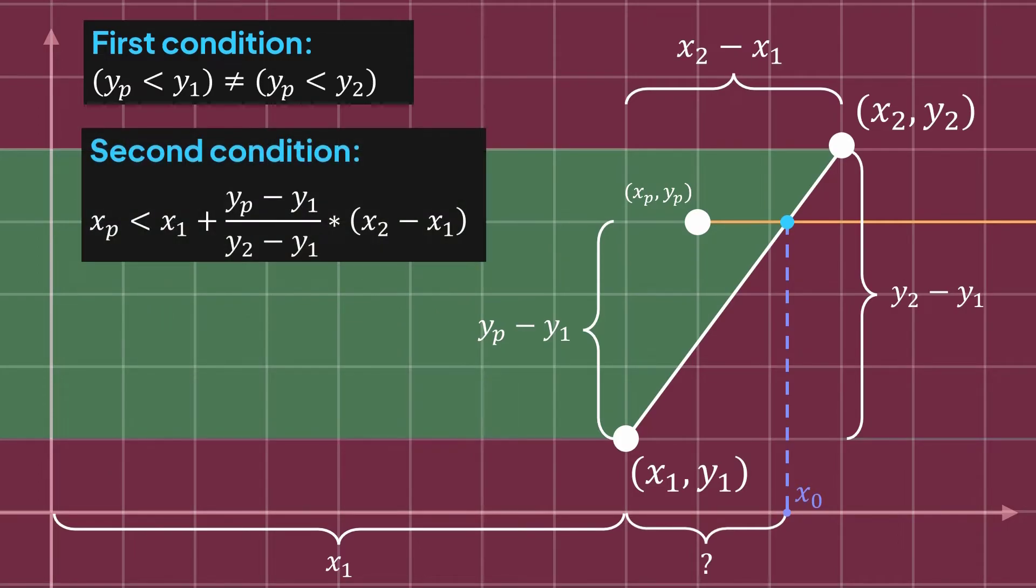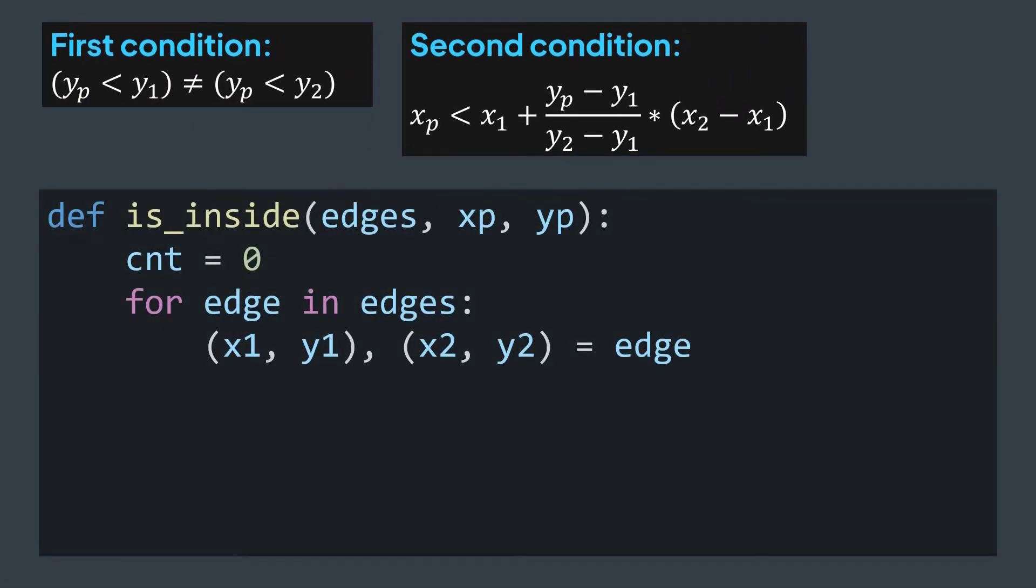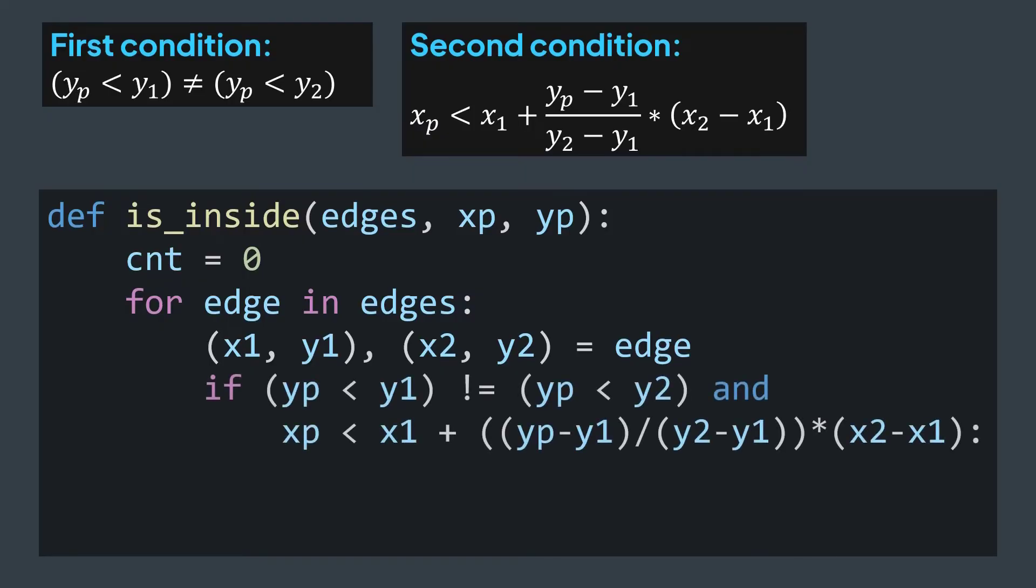So if xp is smaller, then the ray we cast to the right crosses the edge, we increment the counter. Let's add it to our code. We have our point xp, yp, the two points that determine our edge x1, y1, and x2, y2. And to check if the ray crosses the edge, we had two conditions: yp smaller than y1 different from yp smaller than y2, and xp smaller than x1 plus yp minus y1 divided by y2 minus y1 multiplied by x2 minus x1. If both are respected, we increment the counter.